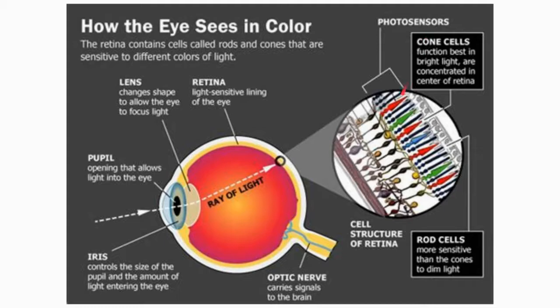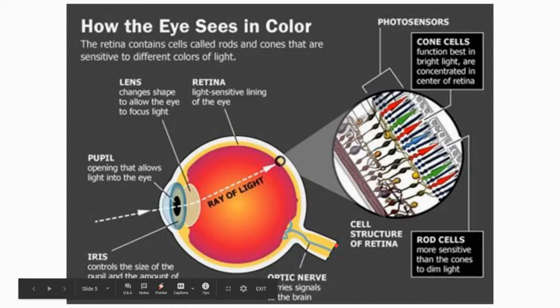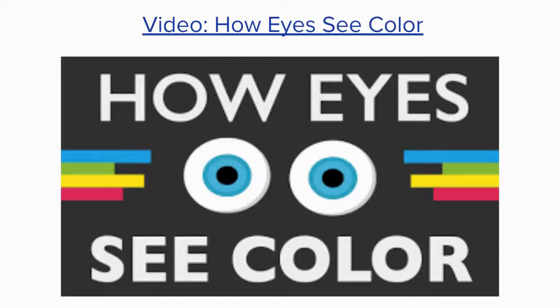There are three separate cones. One interprets the color red, another interprets the color green, and then finally there's a cell that interprets the color blue. When a wavelength of light reflects into our eye, our cone cells interpret that signal, sending that information down the optic nerve into the brain. Our brain then unscrambles that code and says, oh, I'm looking at a red apple right now.